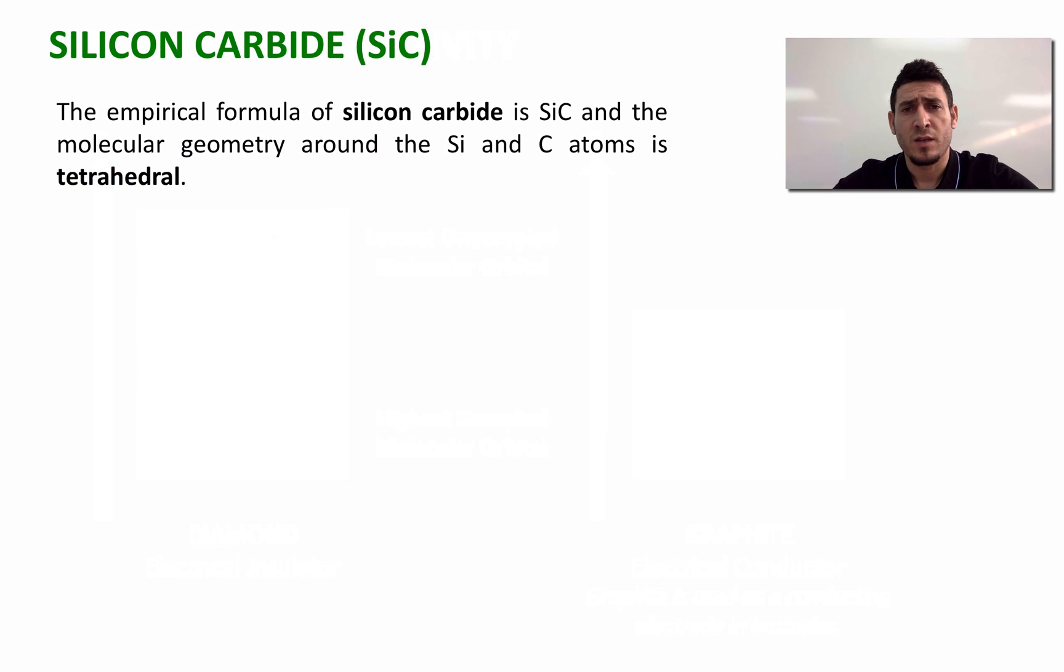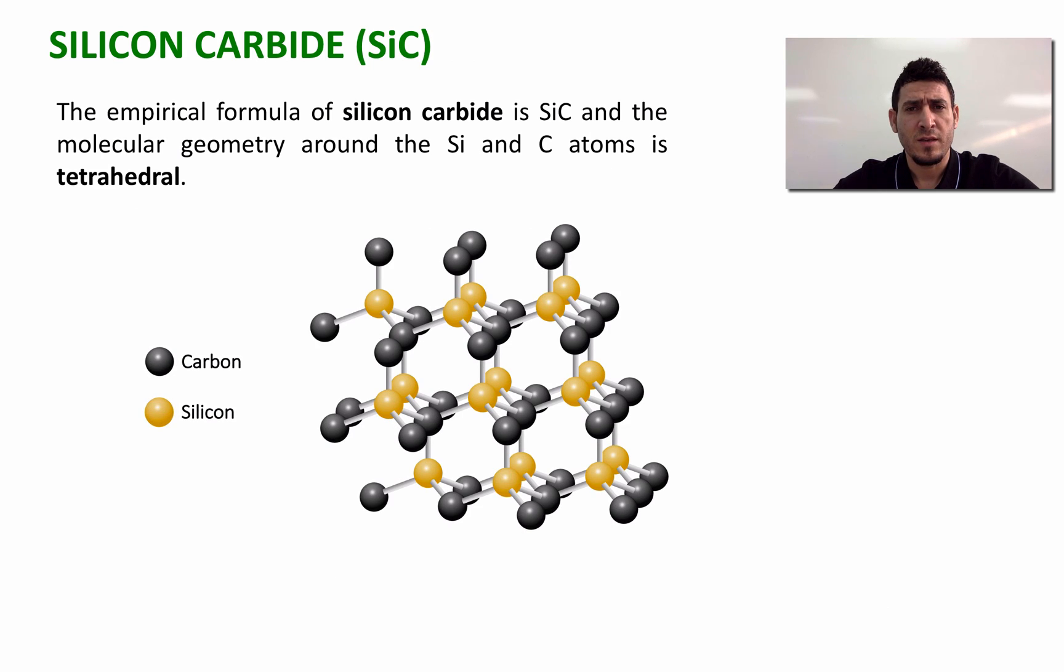Now that I showed you network solids made from carbon atoms, let's discuss network solids made from silicon atoms. The first example I'm going to discuss is silicon carbide, where the empirical formula for silicon carbide is SiC. If we take a look at the solid, we can see that the geometry around each silicon atom or carbon atom is tetrahedral, and therefore the hybridization around these atoms will be sp3 for both of them. The structure of this solid will be very similar to that of diamond, but it will not have the same properties.